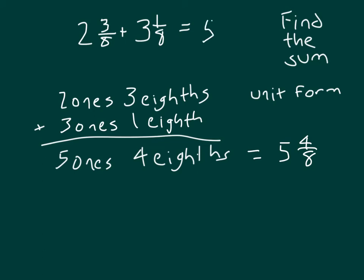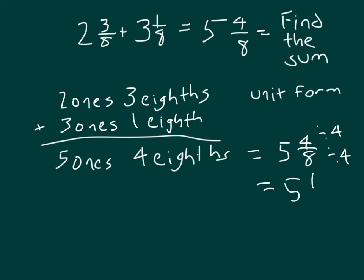Let's write that sum where it belongs. When adding mixed numbers, we add the fractional parts — three eighths along with one eighth, where the units are the same — to get four eighths, and we add the whole numbers: two along with three gives us five. We also need to express the sum in simplest form, dividing both numerator and denominator by four to get five and one half.